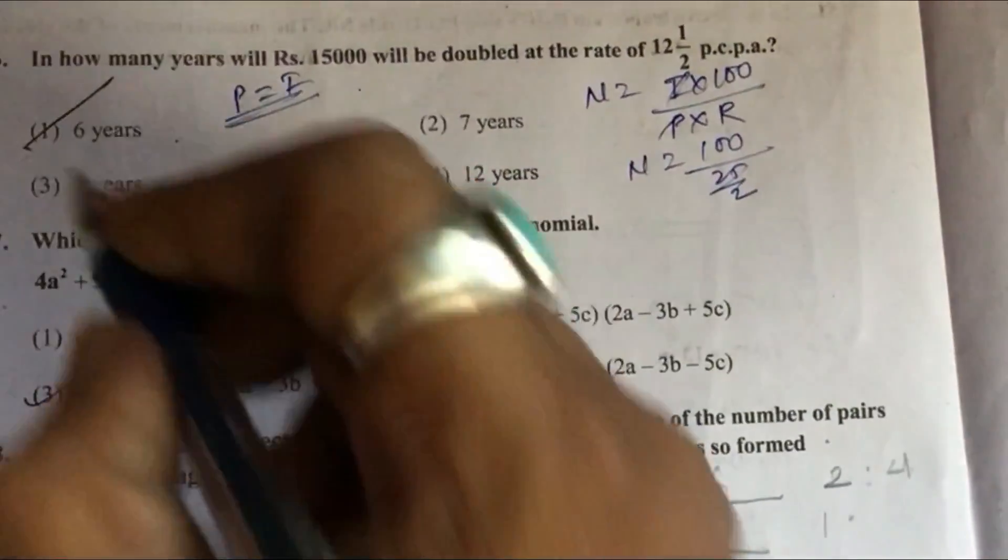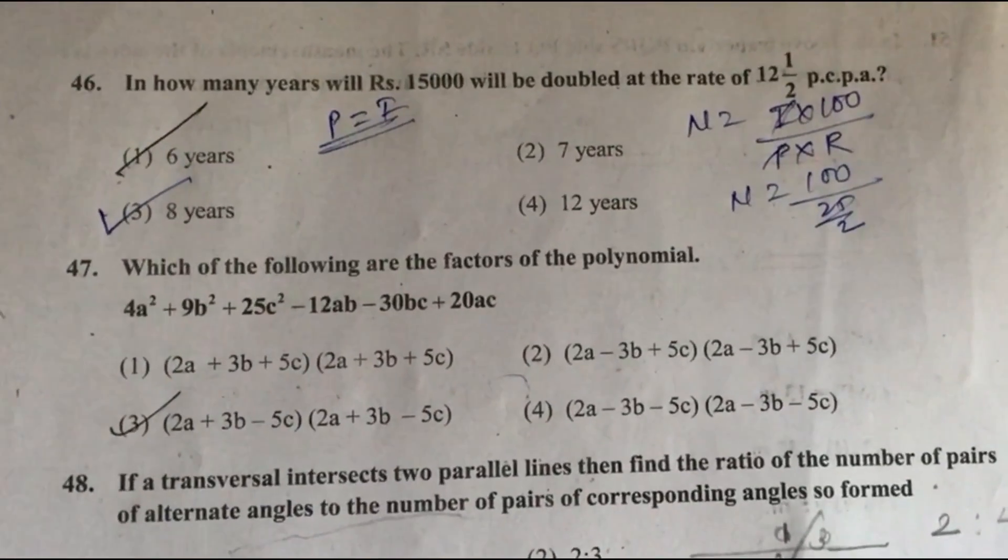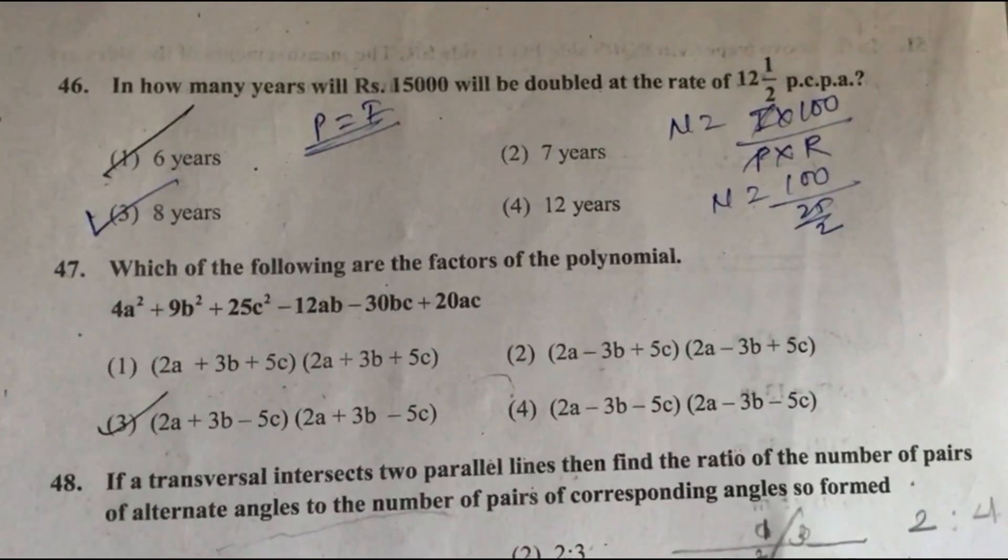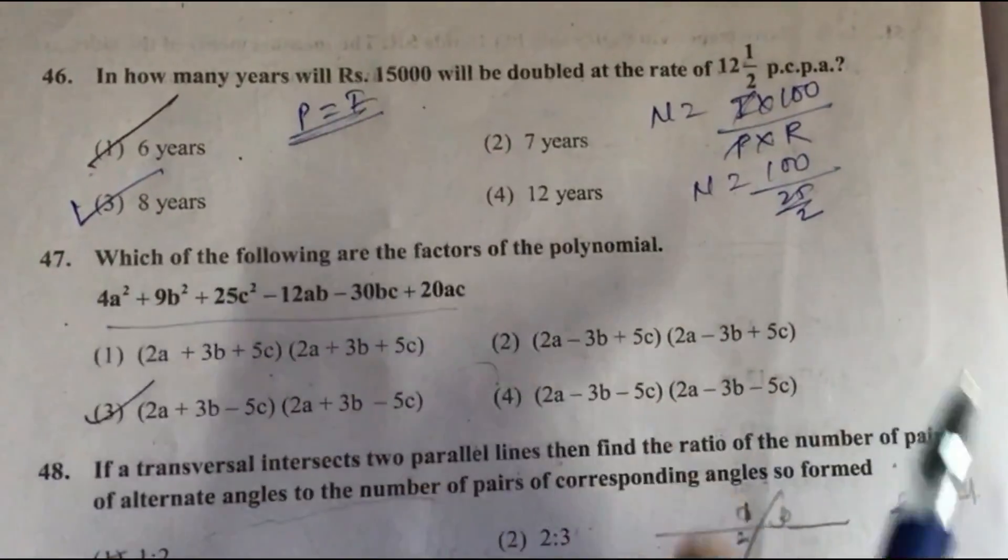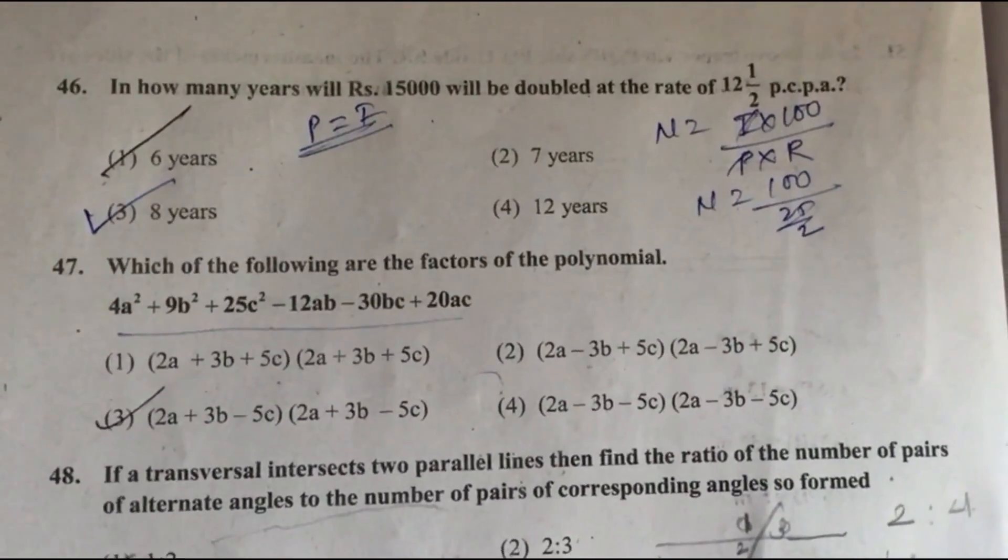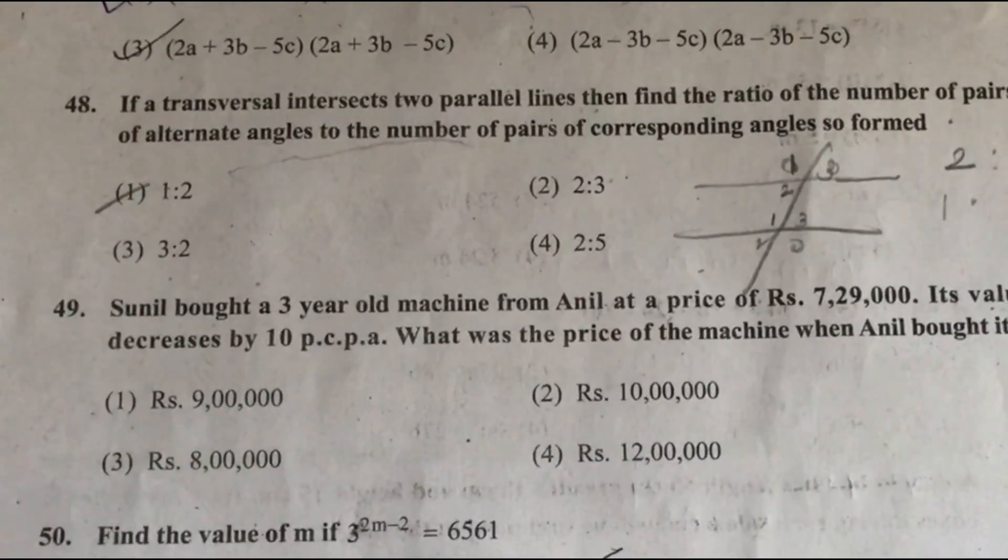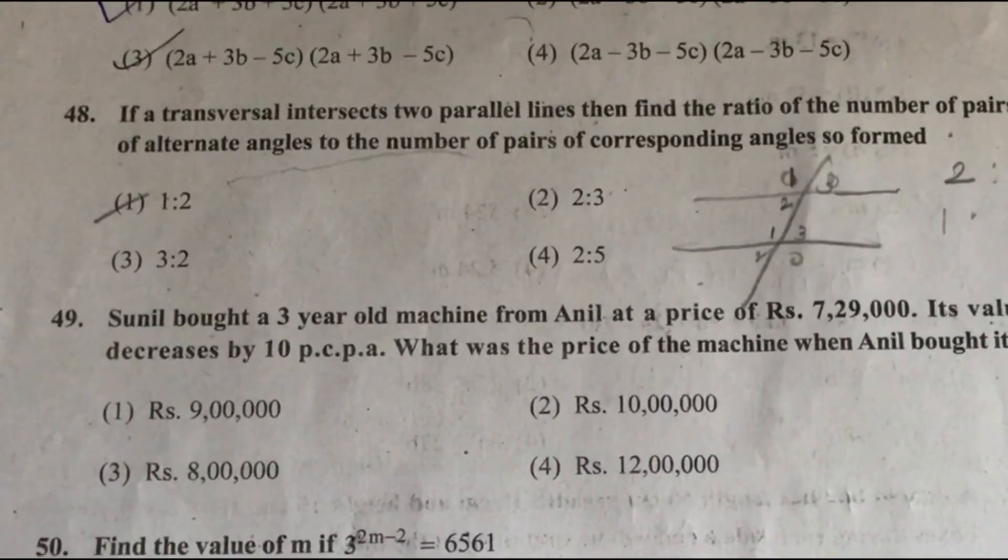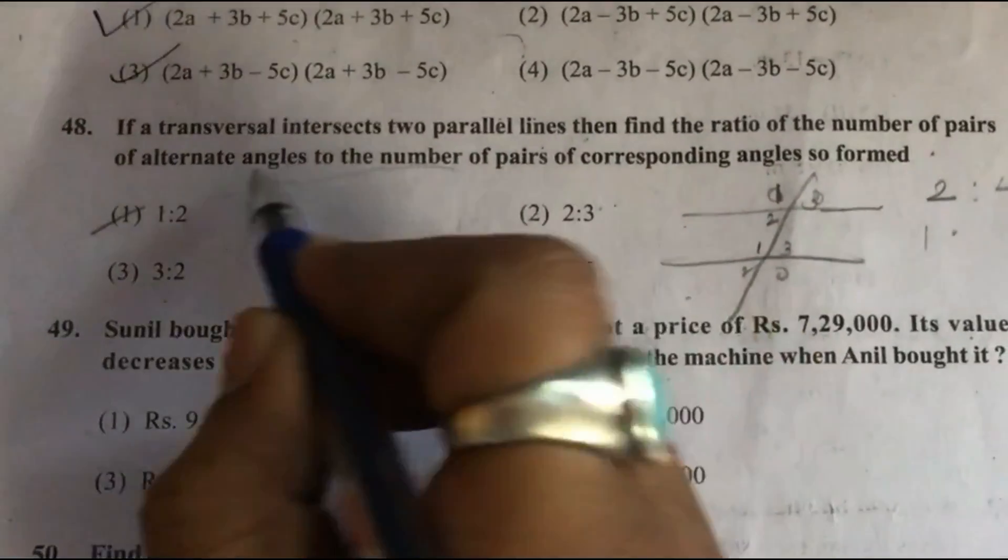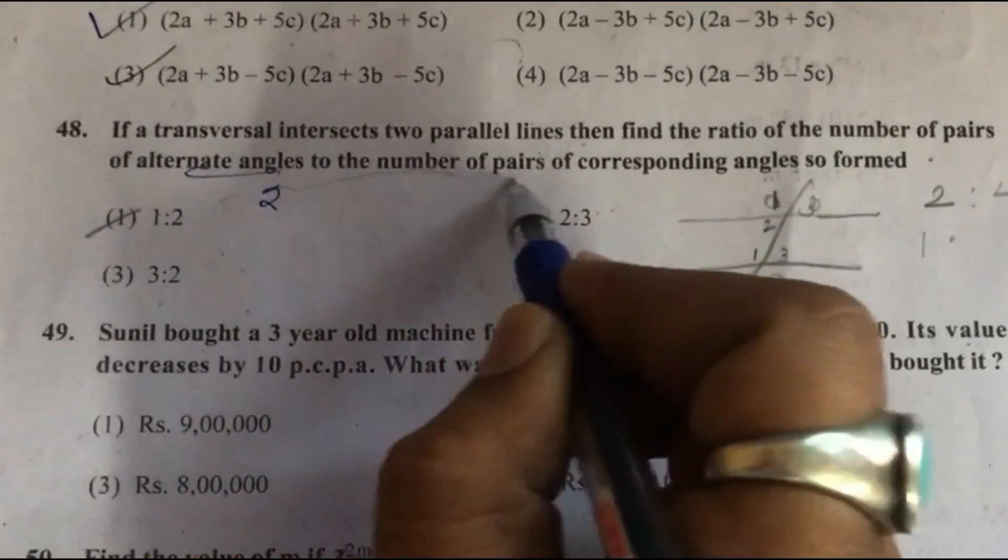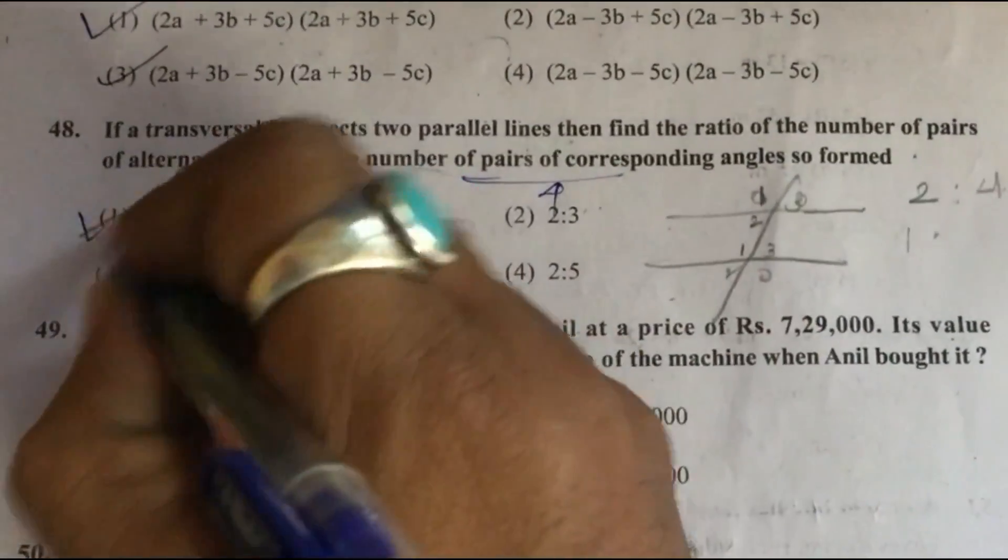We will get option 3, 8 years. Question 47: Which of the following are the factors of the polynomial? When we solve this complete equation, we will get answer option 1. Question 48: If a transversal intersects two parallel lines, then find the ratio of the number of pairs of alternate angles to the number of pairs of corresponding angles so formed. Alternate angles are 2 pairs, corresponding angles are 4, so ratio is 1 raise to 2, option 1.